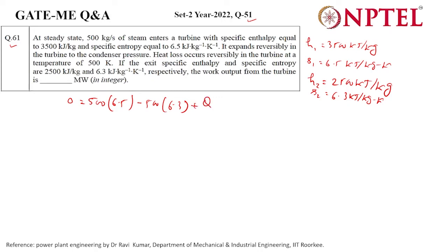In order to make it zero, some heat transfer would be taking place. Heat would be going out of the system, so Q by 500. We can easily find the value of Q. It will become 50,000 kilowatt, so Q would be 50 megawatt of heat transfer by the turbine.